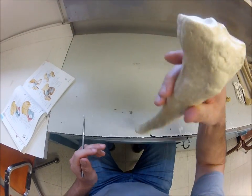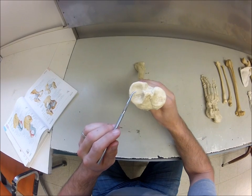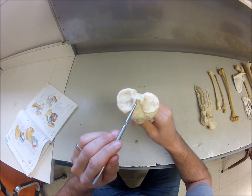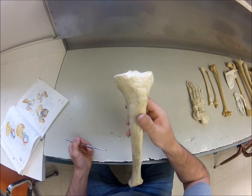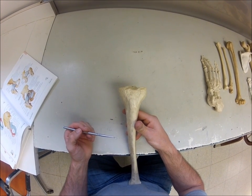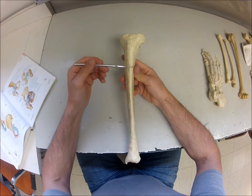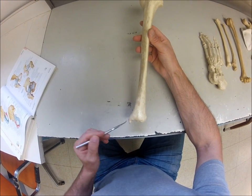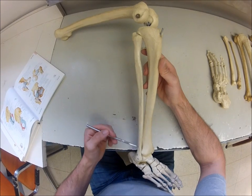Looking at the tibia — at the proximal end we have the medial and lateral condyles of the tibia. Between the two condyles there are intercondylar eminences, which is where the ACL and PCL attach. On the anterior side is a large knob called the tibial tuberosity, where the patellar ligament or quadriceps ligament attaches. Following down, there's a relatively sharp anterior crest of the tibia. At the distal end, the piece sticking down is the medial malleolus of the tibia.